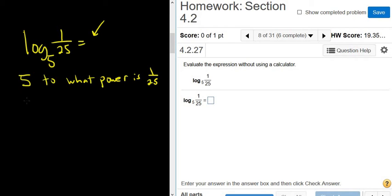Well, 5 squared is 25, but to make it a fraction we need a negative, right? Because if you do 5 to the negative 2, you can write that as 1 over 5 squared. You can bring the 5 down and it makes the exponent negative, and 5 squared is 25.